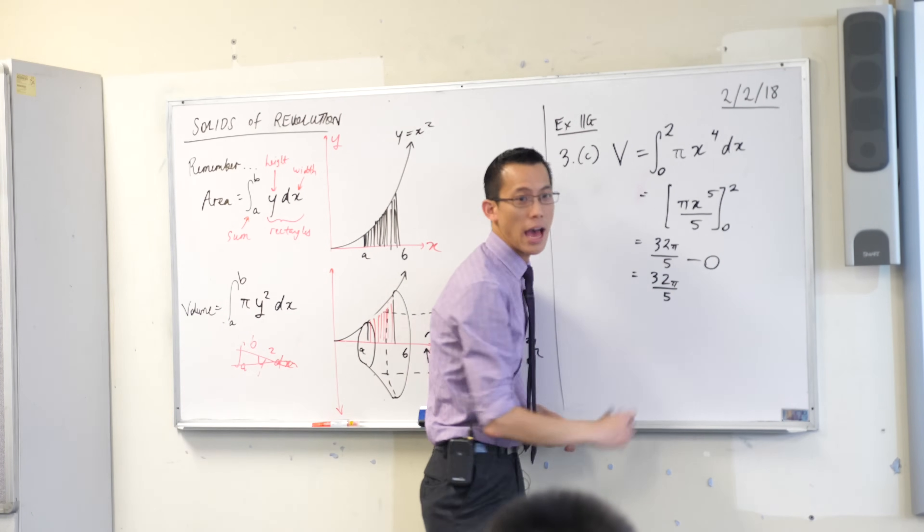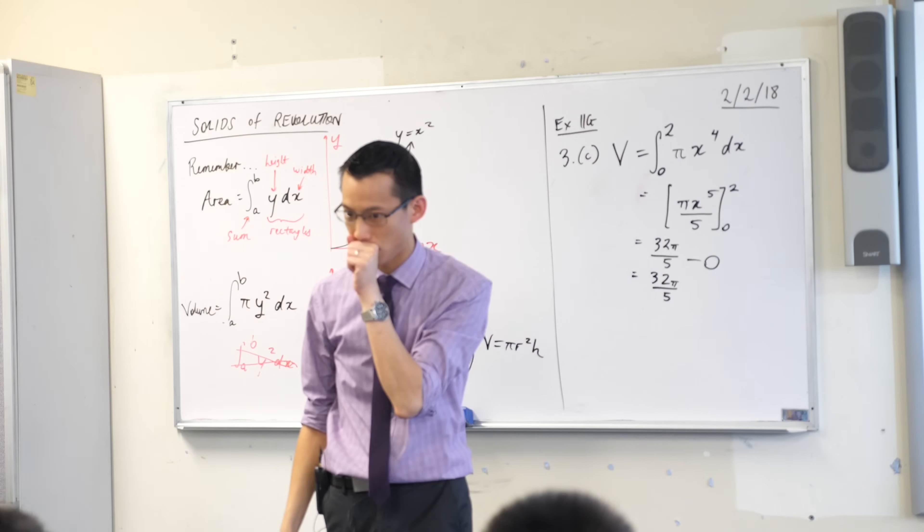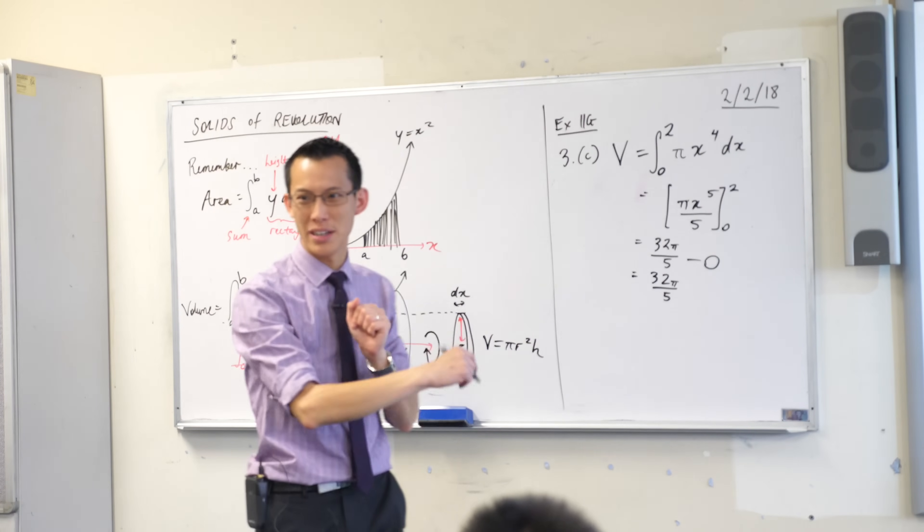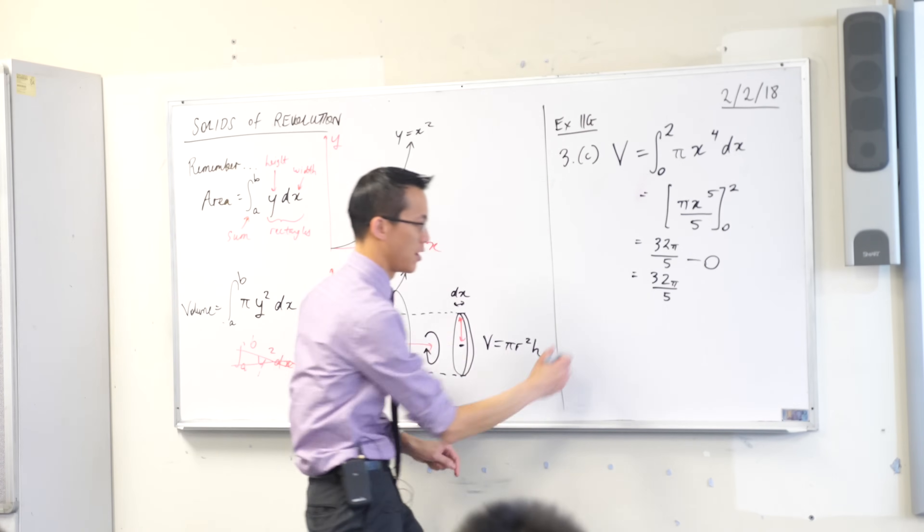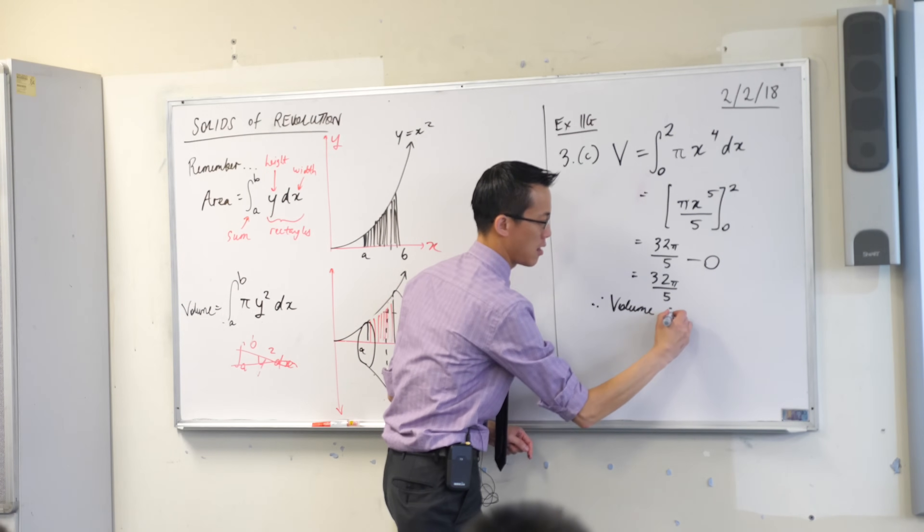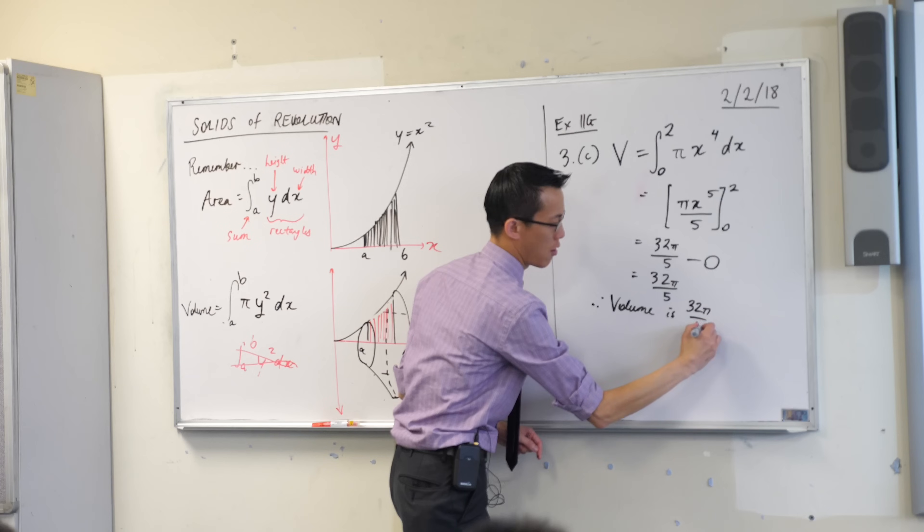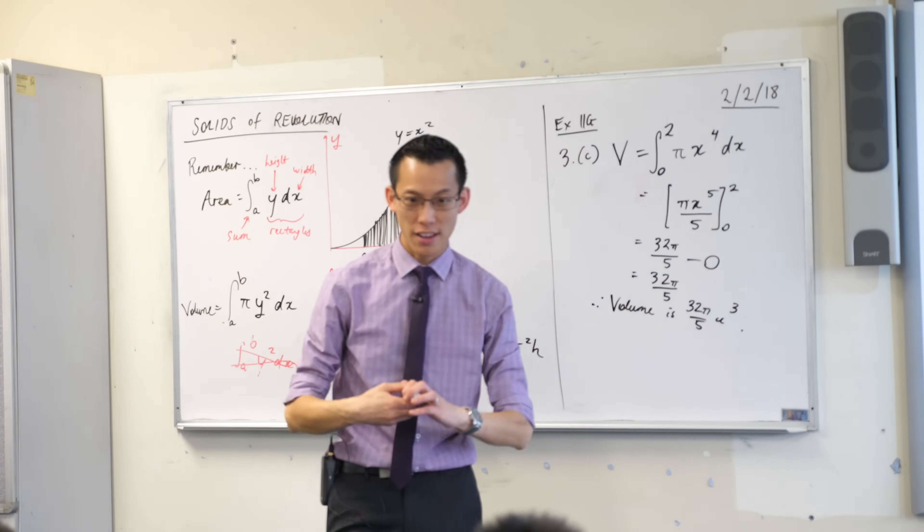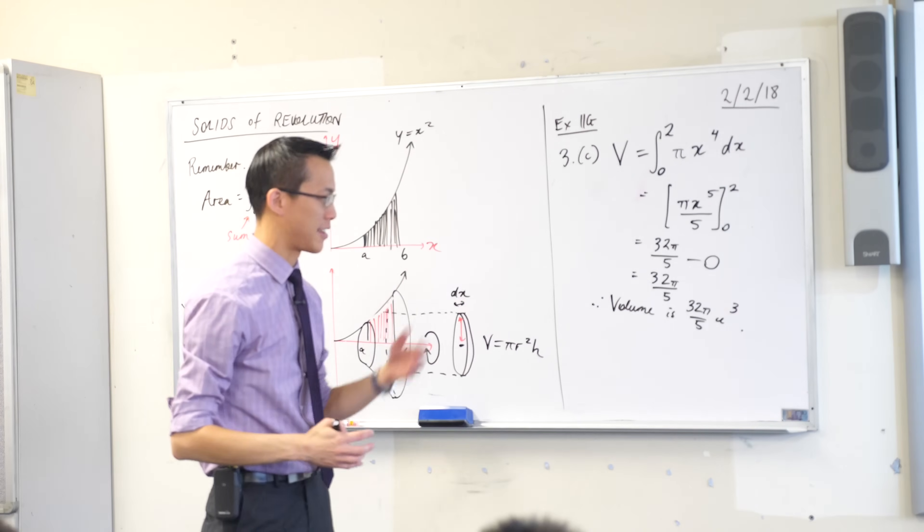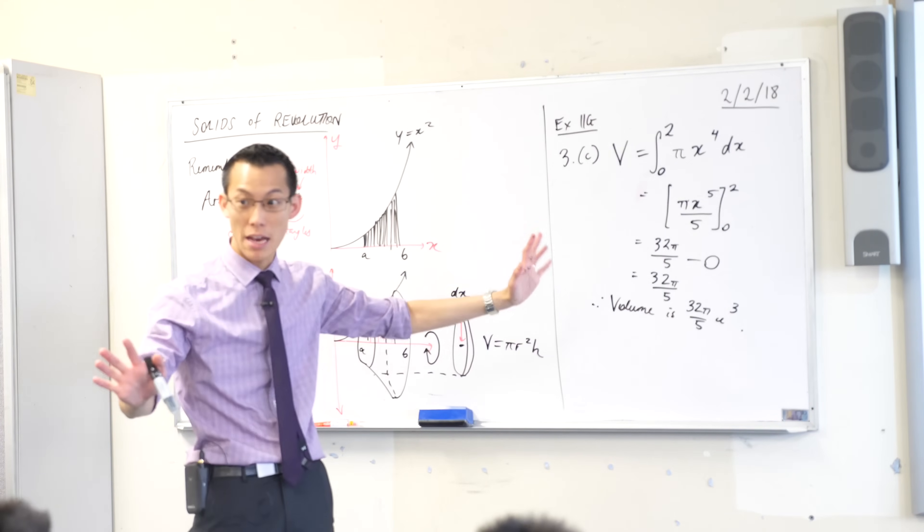32 pi on 5. Have I answered the question? No. I have not. So very close. What do I need to include? This is a volume, right? So I would conclude volume is 32 pi on 5 units cubed. It's okay if you just write units cubed on the end, but I still like to write it properly. Happy? Make sense? It's great. Thank you.